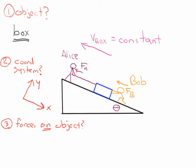Now we need to figure out all of the forces acting on the box. The box has a few forces we know about: the weight due to gravity, which is mass times gravity; the normal force; the force of Bob pushing; and then there's the force that Alice is exerting. To be really specific, Alice is not exerting force directly on the box — she's exerting force on the rope, causing tension on the rope, and the rope is pulling on the box. But we are not quite done yet — there is one other force we have to worry about, and that's the frictional force.